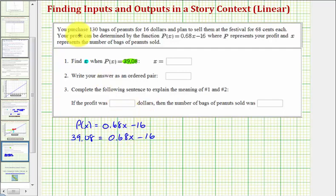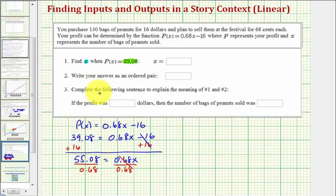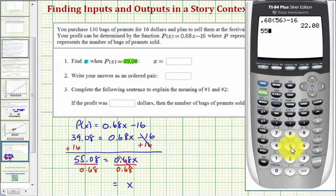So to solve for x, we'd add 16 to both sides. So we have 55.08 = 0.68x, since this is zero. Now we want to divide both sides by 0.68. So x is equal to this quotient which is equal to 81.